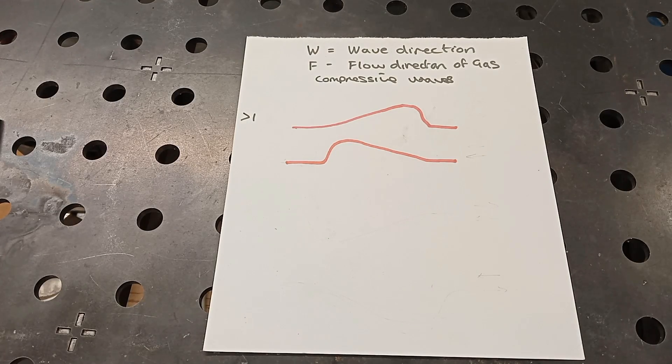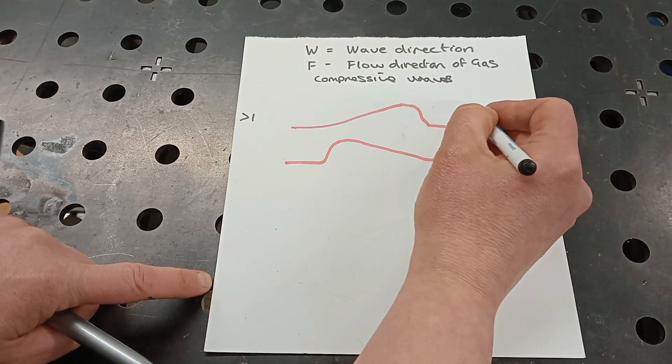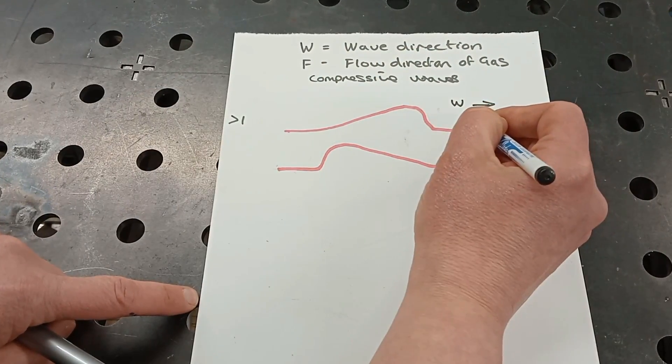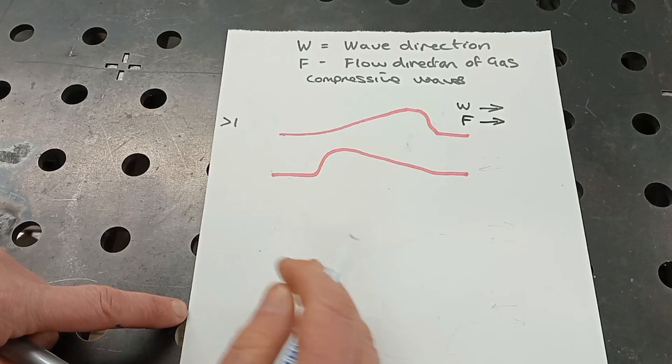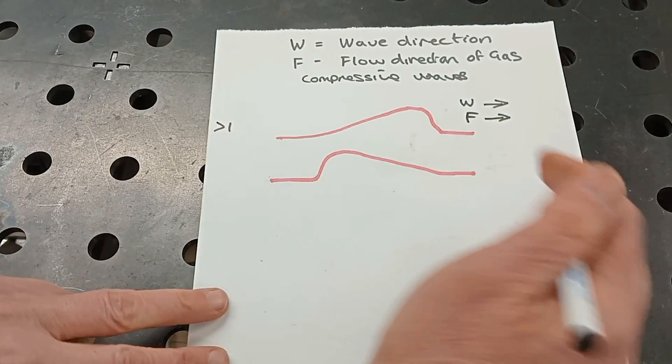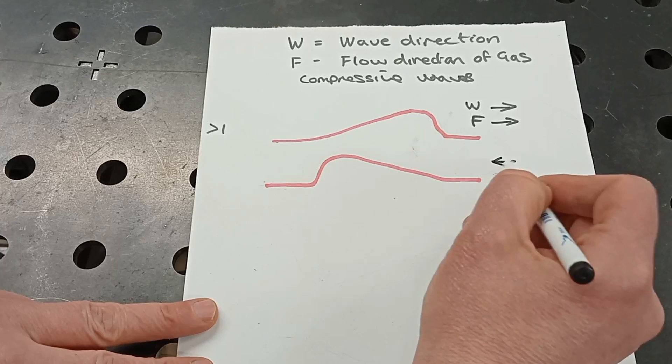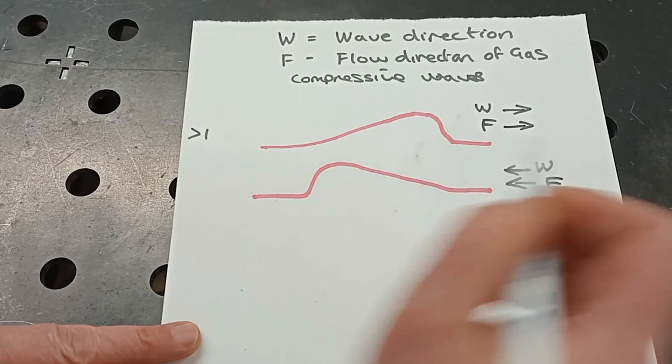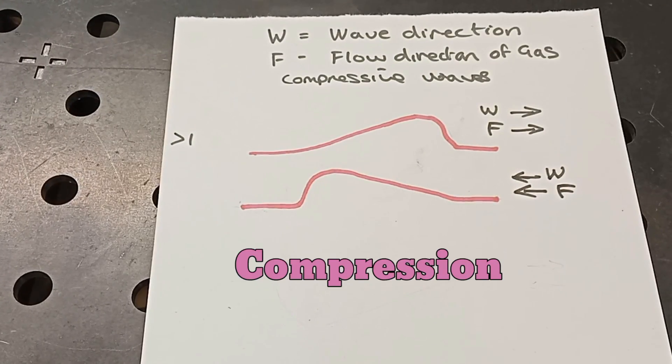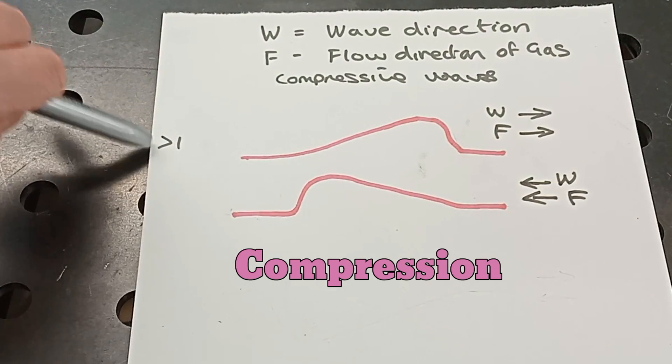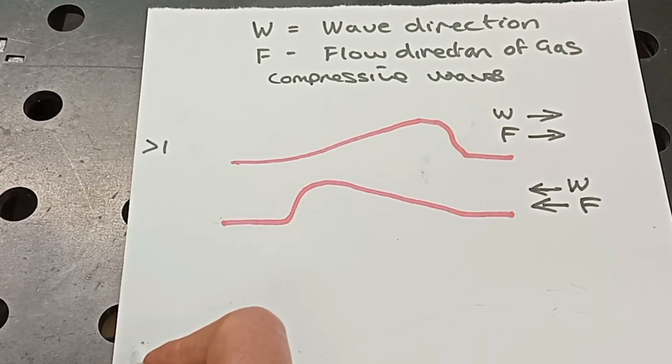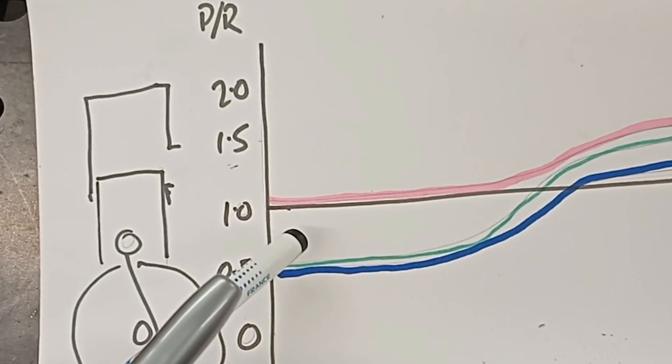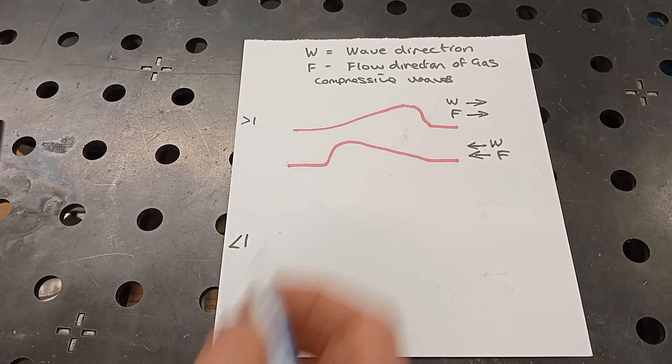So that's the compressive wave and again they're always greater than one. However, conversely less than one as we saw before on here, that is known as an expansion wave. So as I've already stated that's below one.